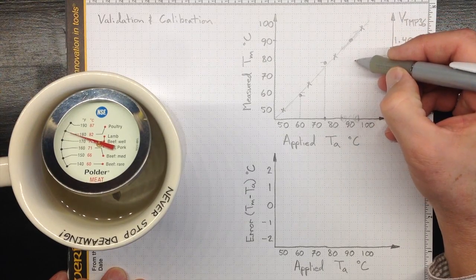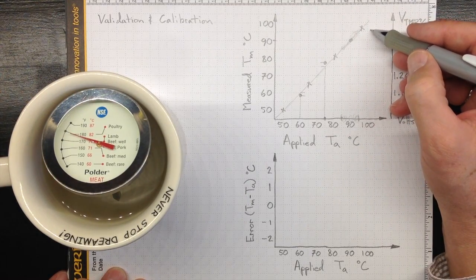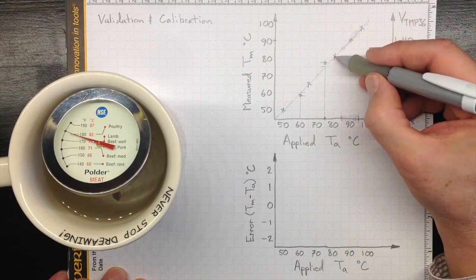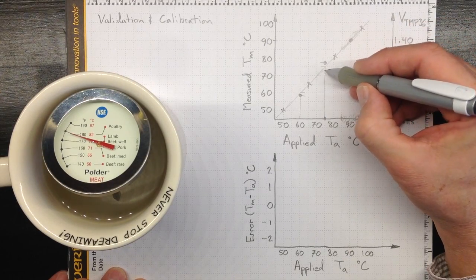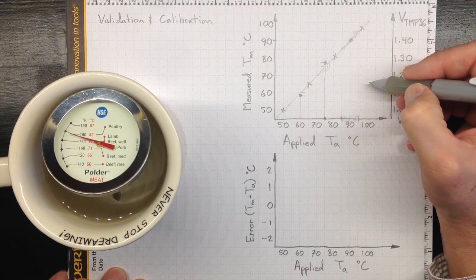But, if we want to understand those errors better, we really need to look at them by zooming in, so that we just see the detail of how big is the error.